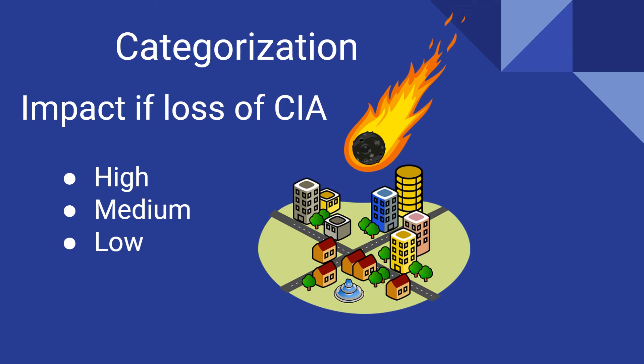For example, if we have a meteor about to hit a city — or let's say a pandemic hitting your city, which is what we're going through right now — certain services are going to become unavailable. That's going to have an impact on everyone's life: people can't get haircuts, they can't get toilet paper, they can't get eggs, whatever the case may be.